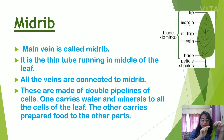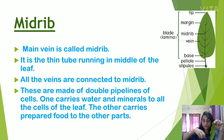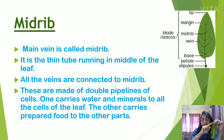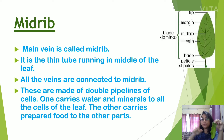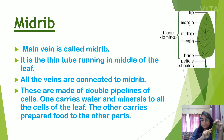One pipe carries water and minerals from the soil, from the roots, and the other pipe carries the prepared food. After the plant prepares its food, it needs to be carried to other parts, so the other pipe carries the prepared food to the other parts of the plant.